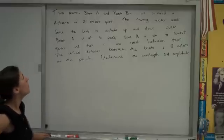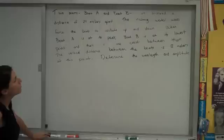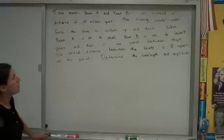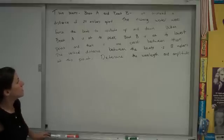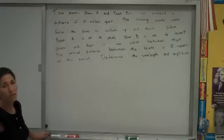The problem says, two boats, boat A and boat B, are anchored a distance of 24 meters apart. The incoming waterways force the boats to oscillate up and down. When boat A is at its peak, boat B is at its lowest point, and there's one crest between the boats.